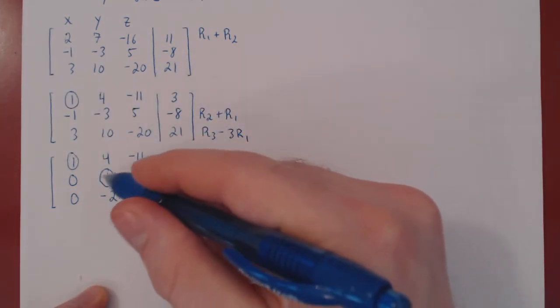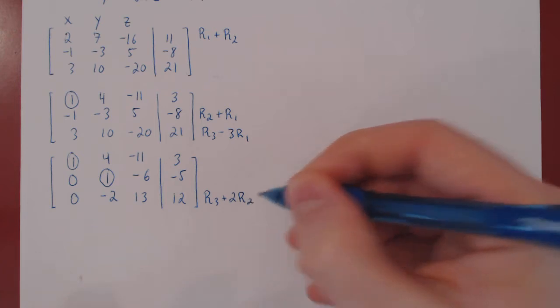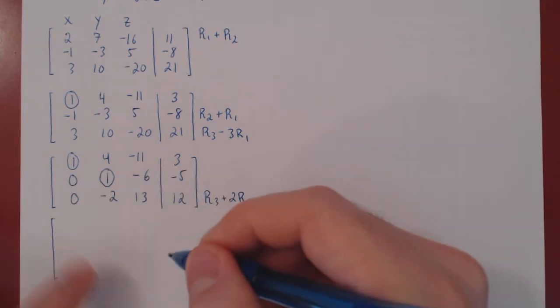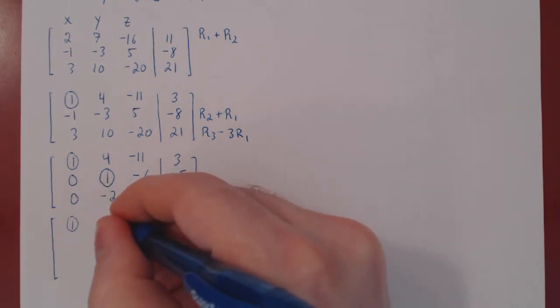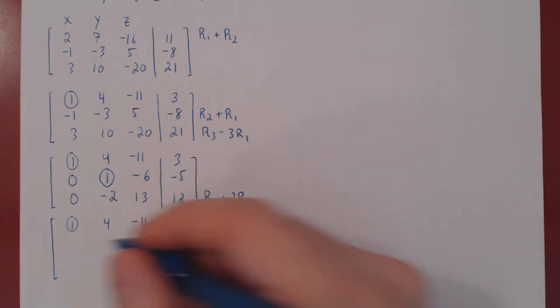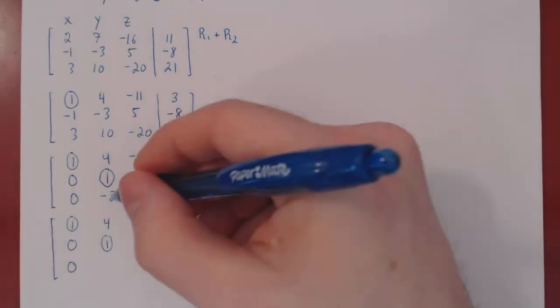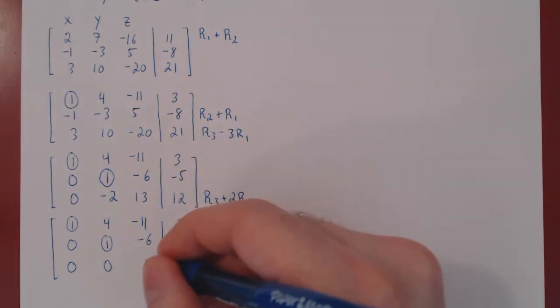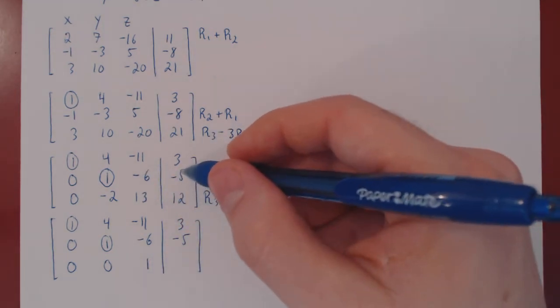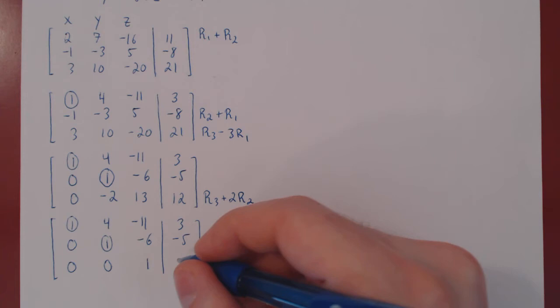Now that we have a leading 1 in the top row, ignoring of course the first row, we kill the entries below. Well, we'll simply do row 3 plus 2, row 2. We are only changing the third row, so we can recopy the first and second. Let's apply the row operation. So 0 plus 0, 0. Negative 2 plus 2, 0. 13 plus 2 times negative 6 is 13 plus 12, which is positive 1. 12 plus 2 times 5 is negative 10. 12 minus 10, positive 2.